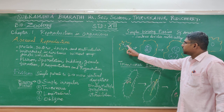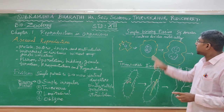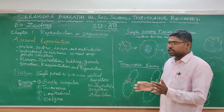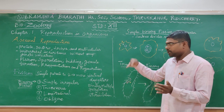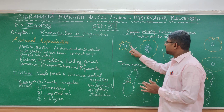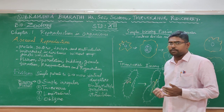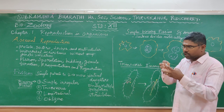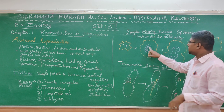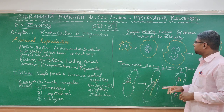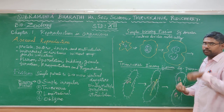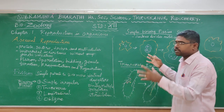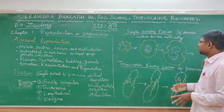First, the nucleus divides — that is called Karyokinesis. Once karyokinesis is completed, the cytoplasm also divides — that process is called Cytokinesis. Nucleus division is Karyokinesis, and cytoplasm division is Cytokinesis. The result is two daughter Amoebae from one parent Amoeba — this is Simple Binary Fission.